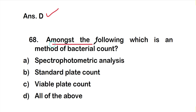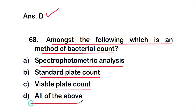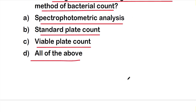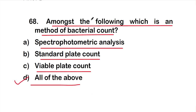Question number 68: Amongst the following, which is a method of bacterial count? Options are: A) spectrophotometric analysis, B) standard plate count, C) viable plate count, D) all of the above. The right answer is option D — spectrophotometric analysis, standard plate count, and viable plate count can all be used for bacterial count.